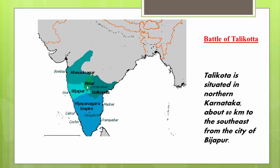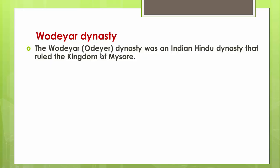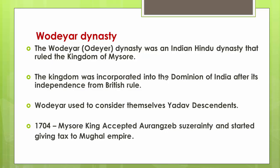After the Vijayanagara Empire, the Wodeyars ruled Mysore, then came Haider Ali's empire, then Tipu Sultan, and then the Wodeyars were again given authority over Mysore under the tutelage of the British, before the kingdom was finally incorporated into the Dominion of India after independence. The Wodeyars considered themselves descendants of the Yadavas, and in 1704 the Mysore king accepted Aurangzeb's suzerainty, paying tax to the Mughal Empire.